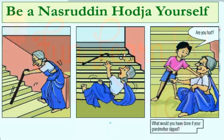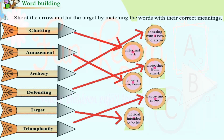Activity: Imagine dadi is sitting on the wall and fell. What would you have done? What would you say if you were there when grandmother fell? Next activity: Shoot an arrow and hit the target by matching the words. Match the words correctly.